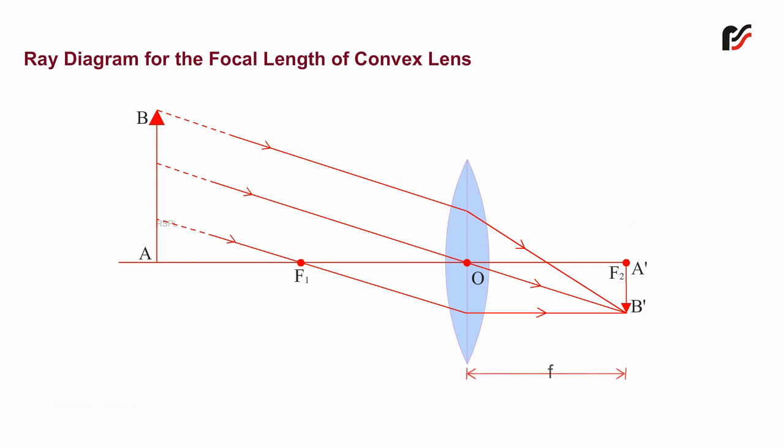The separation between the lens and the screen placed at the focus gives the approximate focal length of a convex lens.